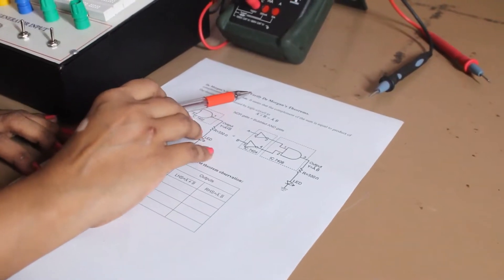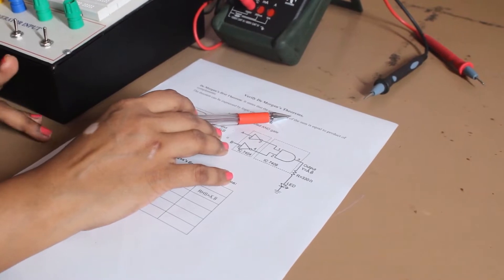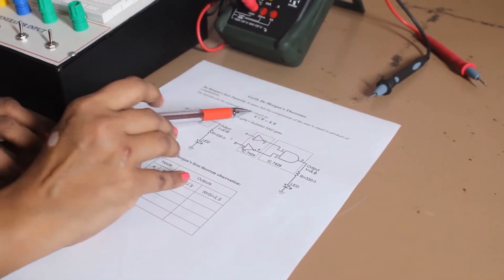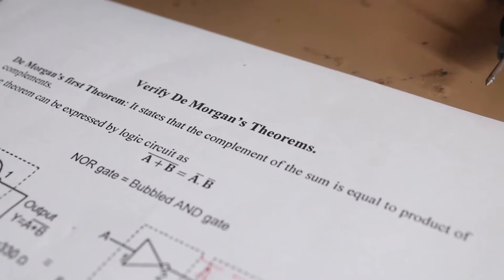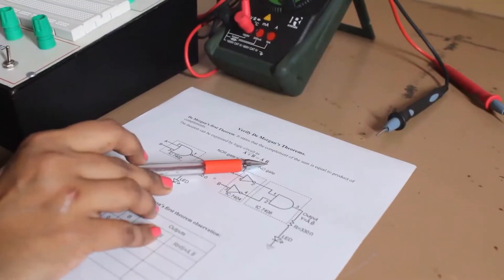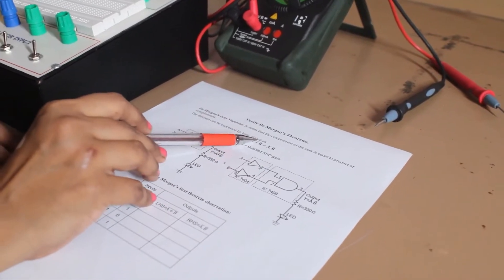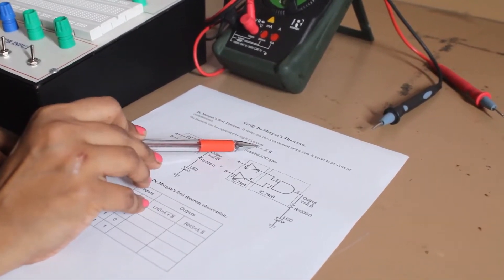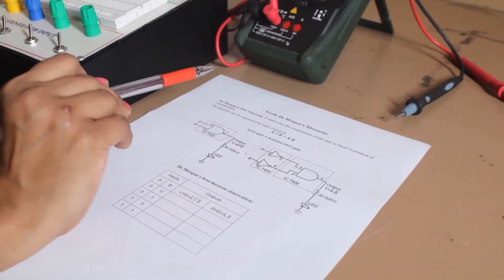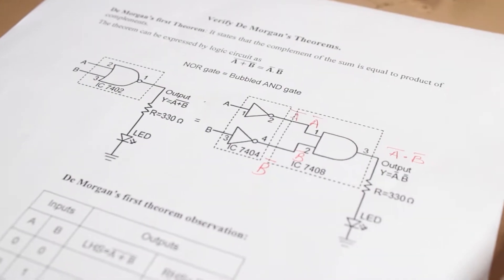Today's experiment is to verify De Morgan's theorems. There are two De Morgan's theorems. The first one is: A OR B, the whole complement, is equal to A-bar AND B-bar. In other words, the complement of a sum is equal to the product of their individual complements. We have to design two circuits: the left hand side and the right hand side.